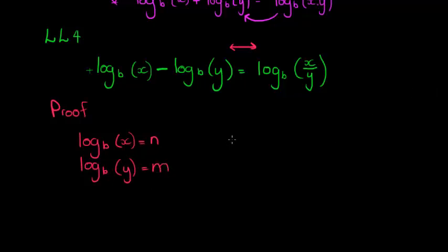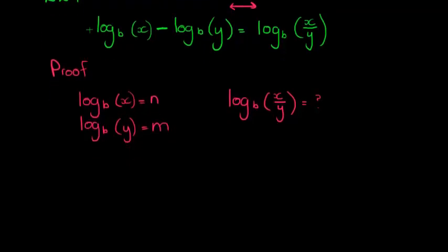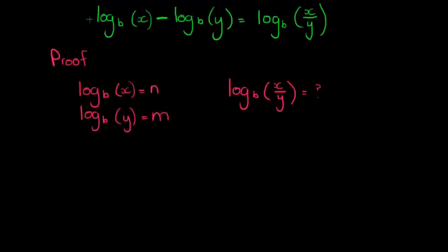And now the question would be, well, log of b, what value must we give you, what exponent must we give you to get x divided by y? And we want to go and figure out what value must we give you to get x divided by y. So let's again look at this in its exponential expression. So this is the logarithmic expression. Exponentially it would be b to the power of n is equal to x, and this second one would be b to the power of m is equal to y.